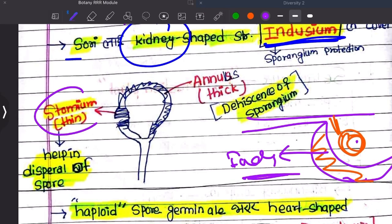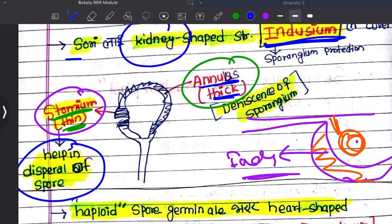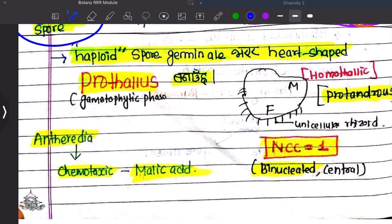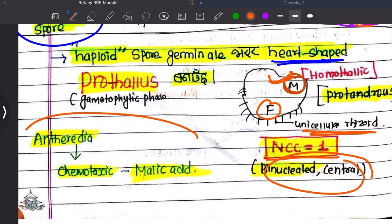Stomium is a thin structure. Annulus is a thick structure. Sporangium. Annulus is a thick structure. Stomium is thin. This is a heart-shaped structure. This is the sporangium. It is a very good source of unicellular spores, by using meiosis. This is a multicellular structure.